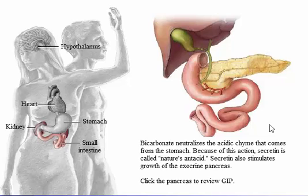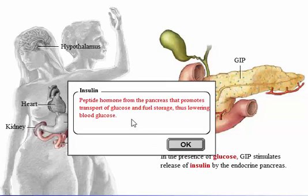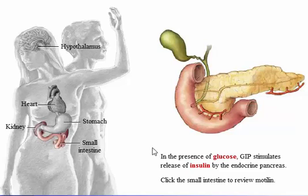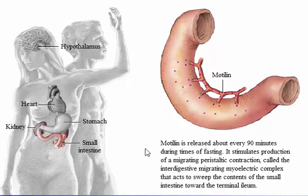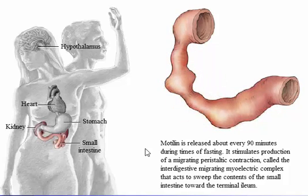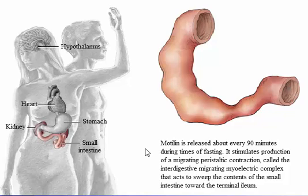In the presence of glucose, GIP stimulates release of insulin by the endocrine pancreas. Motilin is released about every 90 minutes during times of fasting. It stimulates production of a migrating peristaltic contraction called the interdigestive migrating myoelectric complex, which acts to sweep the contents of the small intestine along toward the terminal ileum.